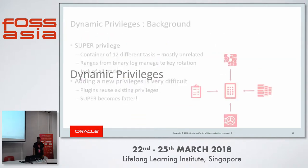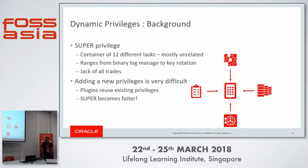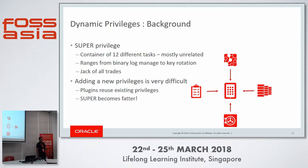Let's move to dynamic privileges. We have something called the super privilege. As of the latest 5.7, there are 12 different tasks that super can perform — as my colleague Joro would put it, that's twice as many as Alice had to do. These 12 tasks are mostly unrelated. For example, if you have super, you can manage binary logs and at the same time manage encryption — two things that have nothing in common. Super has become a jack of all trades with no further granularity; if you grant super, you get everything.